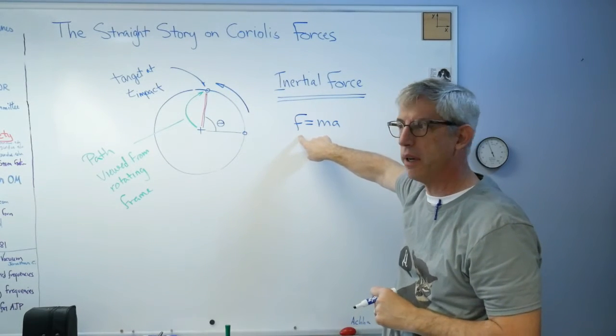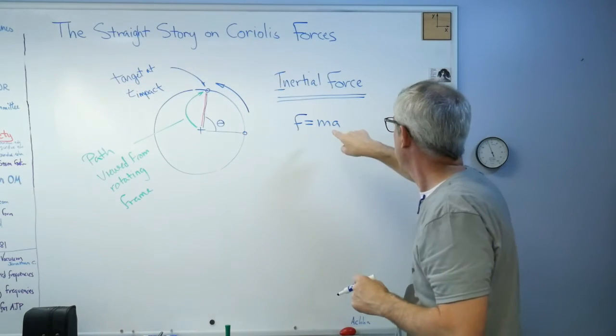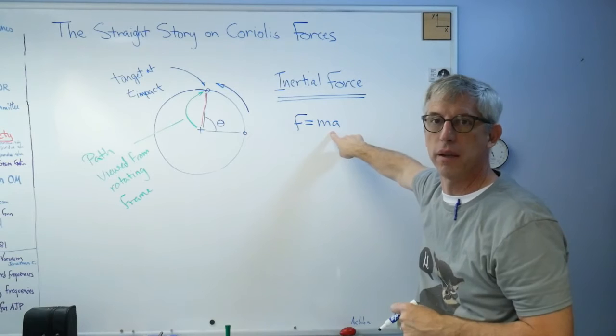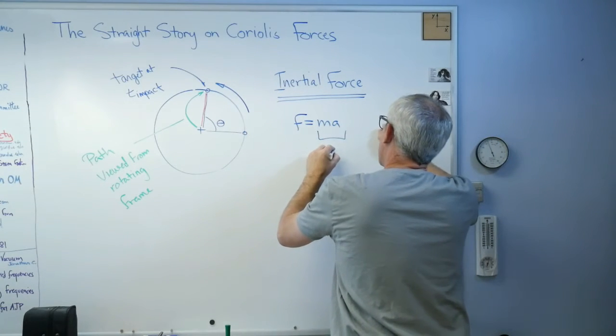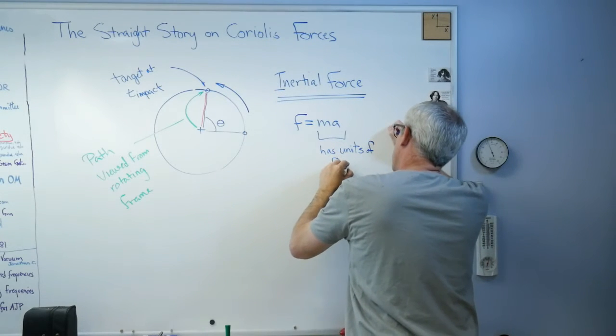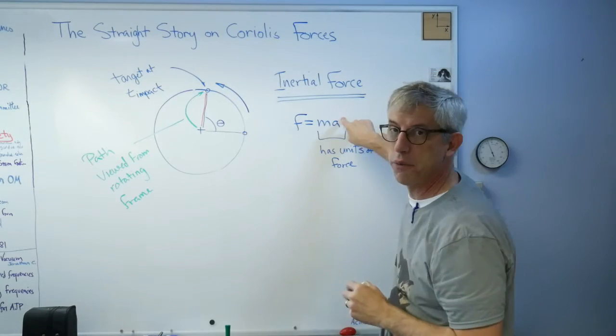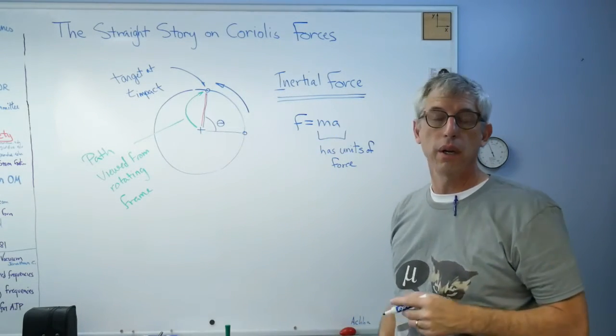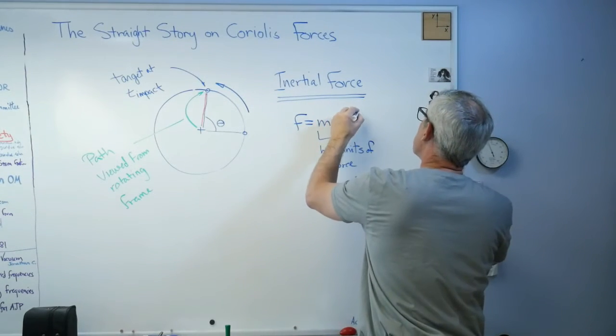This is ma, right? Well, that has units of force. If you treat it like a force and you do it correctly, you're going to get the right answer all the time. So this is what we call the inertial force, also called a fictitious force.